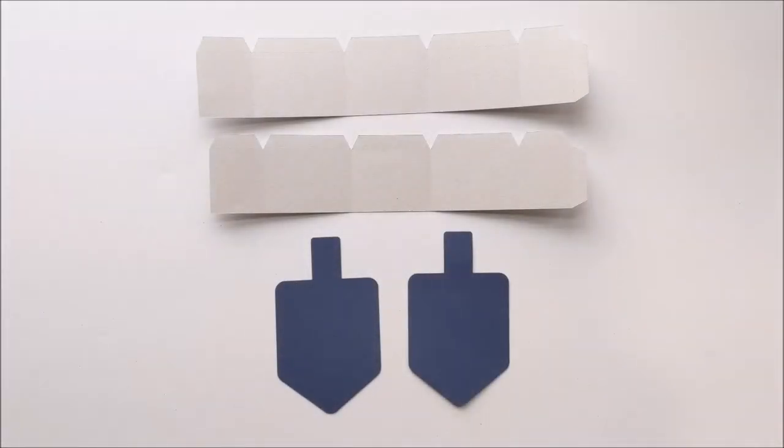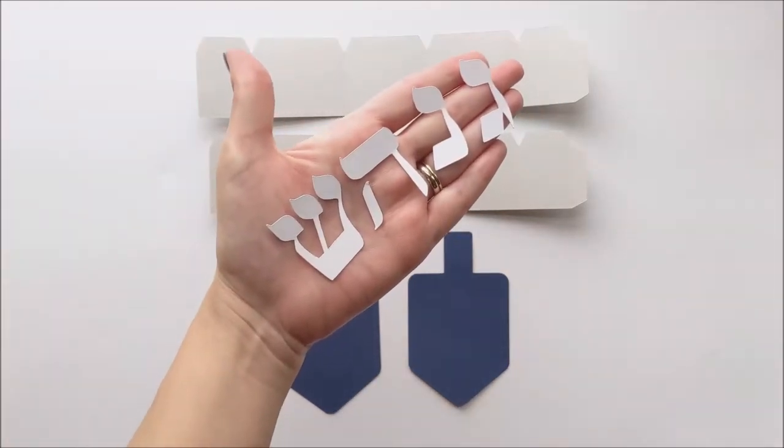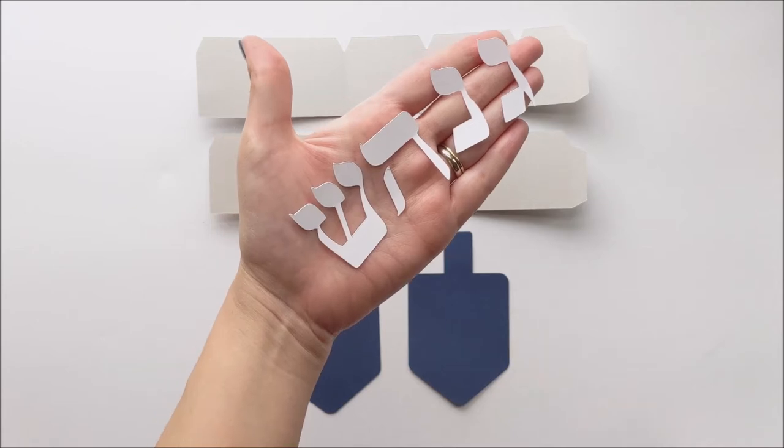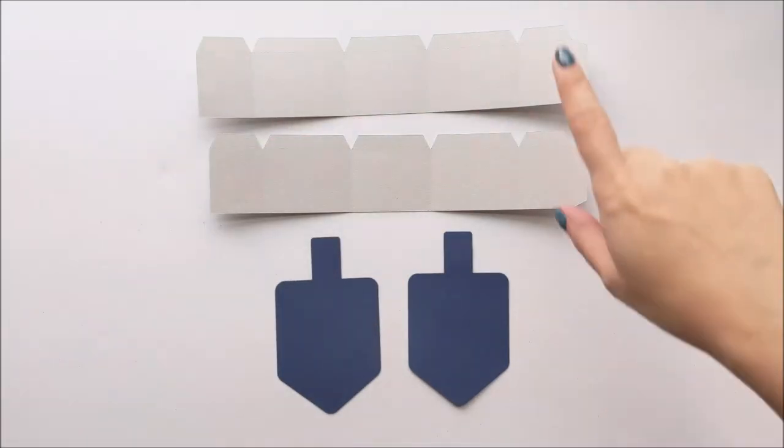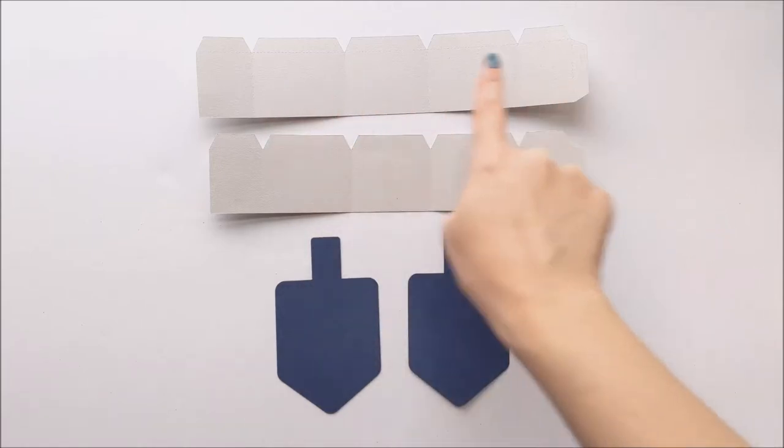Start by cutting out your pieces on your machine. You're gonna have two dreidels, you're gonna have four symbols, and you'll just pick which two of those you want to use. And then you're gonna have the top and bottom of your box. The top will be just a tiny bit longer than the bottom. That just helps them nest together a little bit easier.